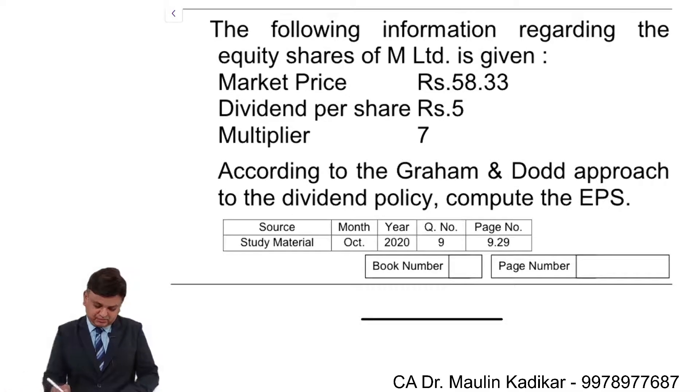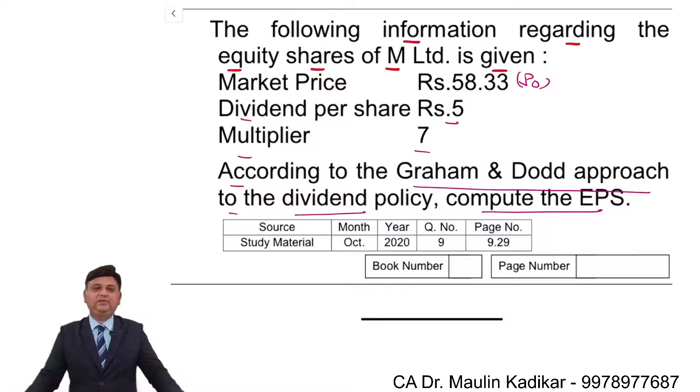Next question: the following information regarding equity share of M Limited is given. P0 is provided to us, market price of the share 58.33, dividend portion is given as 5, multiplier is given 7. According to Graham and Dodd model approach to the dividend policy, compute the earning portion. Please put your answer in the chat box.